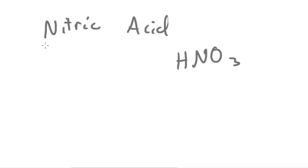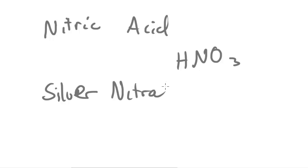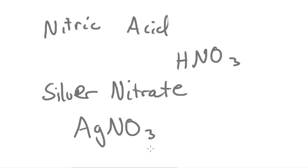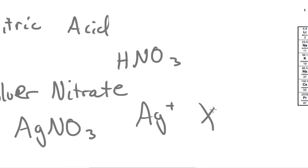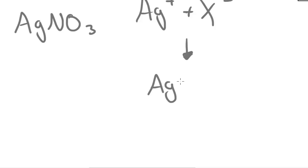Following the step of adding nitric acid and clearing out the ions, we then add silver nitrate — AgNO3 — which is one of the key steps in this process. The reason we add silver nitrate is that the silver ions, Ag+, react with the halide ions, X-, and that produces a precipitate: a silver halide, AgX.